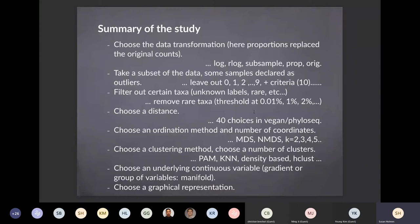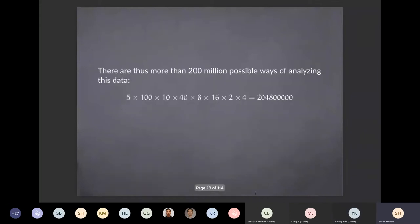You have to filter out certain taxa — some because they're unknown, others because they're very rare, occurring in only one or two samples — so you have a choice of threshold and filtering method. Different distances are used in ordination: there are actually 40 different distances in vegan or phyloseq, including chi-square, UniFrac, weighted UniFrac, Bray-Curtis, Hamming, and Jaccard. You must also choose an ordination method — multidimensional scaling, principal coordinate analysis, or non-metric multidimensional scaling — the number of factors, a clustering method, and a graphical representation. When you summarize this, you get about 200 million different possible ways of analyzing the data.